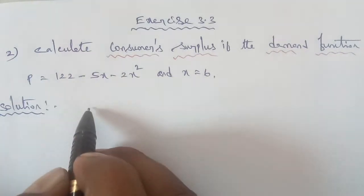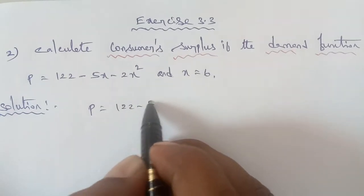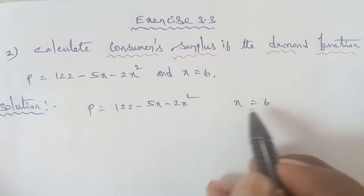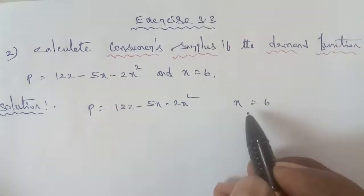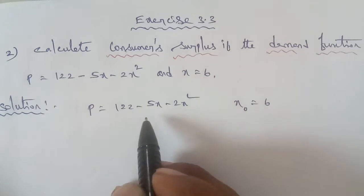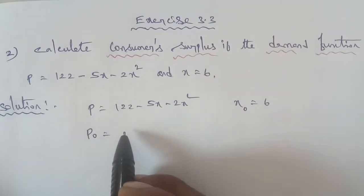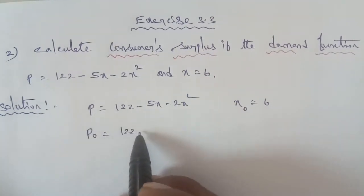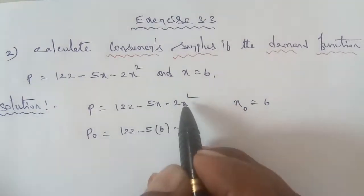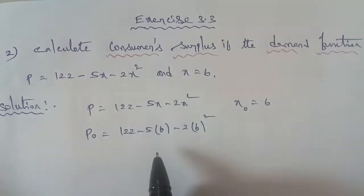The demand function is P equal to 122 minus 5X minus 2X squared, and X is equal to 6. So X₀ is equal to 6. To find the entry point P₀, substitute X equal to 6: P₀ equals 122 minus 5 times 6 minus 2 times 6 squared.